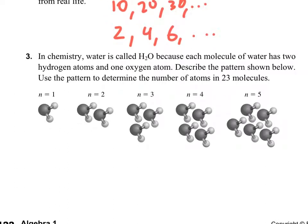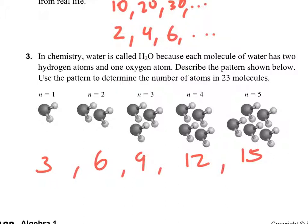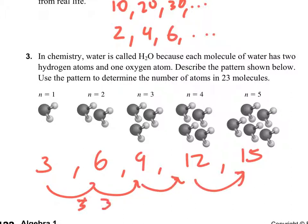Here's a real-life problem. Water is H₂O — two hydrogens and one oxygen in a molecule. If we have one molecule, we have three atoms. Two molecules, we have six atoms. Three molecules, nine atoms. Four molecules, twelve atoms. Five molecules, fifteen atoms. There's a pattern, and that is an arithmetic sequence. We're going up by the same rate every time — we're going up by three every time.